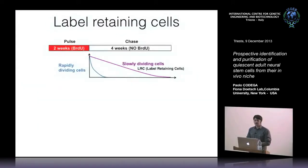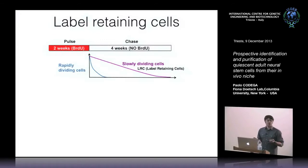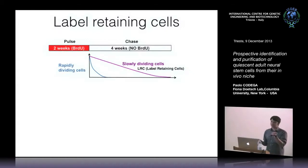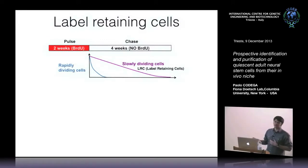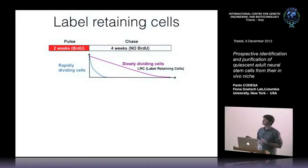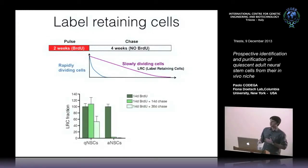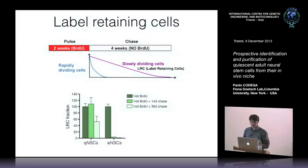We then performed a label retention assay: after a BrdU pulse, BrdU is withdrawn and we monitor how rapidly cells dilute the label. Because when a labeled cell divides, BrdU is diluted into the progeny, a rapidly dividing population dilutes the label quickly, while slowly dividing cells retain it — these are called LRCs or label-retaining cells. We found that activated neural stem cells diluted the label quickly, while quiescent neural stem cells retained the label one month after BrdU withdrawal.